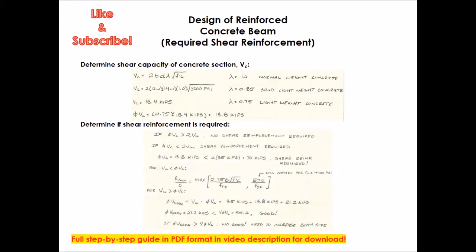Next step is determine whether or not shear reinforcement is even required. Basically you are going to compare your factored strength of your concrete section where no steel is being factored in, and you are going to compare it to the design shear that you are designing for, which is in our case 35 kips. And as you see, phi Vc equals 13.8 kips, that is less than 2 times Vu of 35 kips, which equals 70 kips. So shear reinforcement is required in our case.